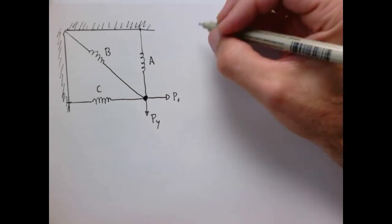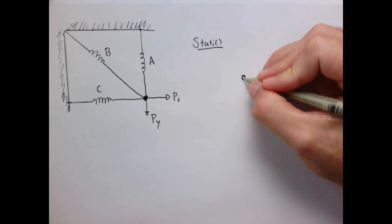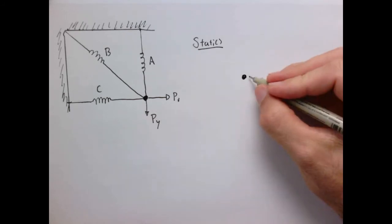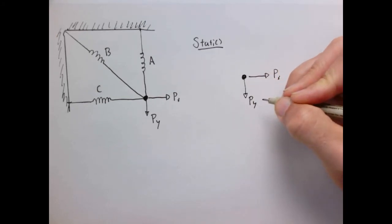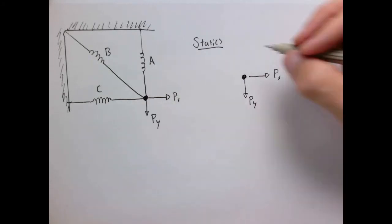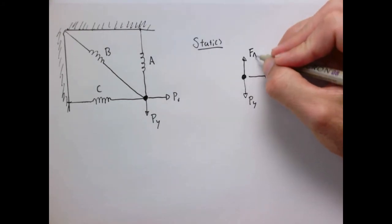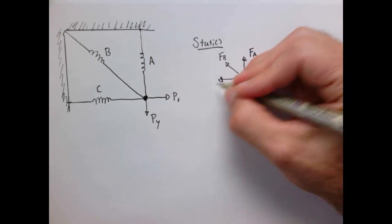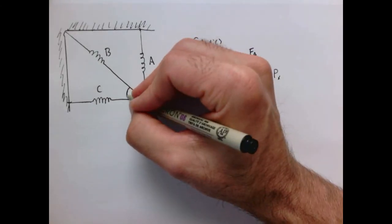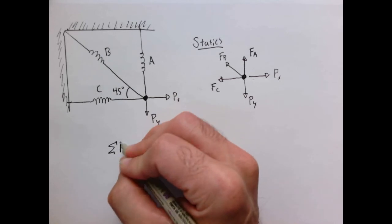Let's start with the free body diagram. At the node, we have the known loads P_x and P_y pulling down. Each of the three springs resists motion along its axis — along its line of action. Spring A pulls in one direction, spring B at 45 degrees, and spring C horizontally. We'll make this a 45-degree triangle so all our sines and cosines work out to a factor of 1/√2.